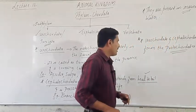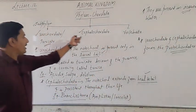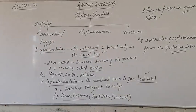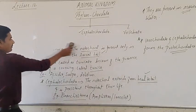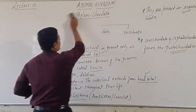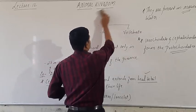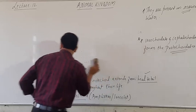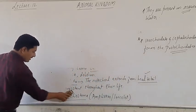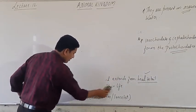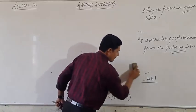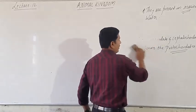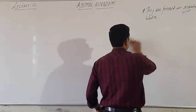What are Protocordates? Protocordates are the primitive form of chordates that include Urochordata as well as Cephalochordata. So that should be your answer. This is regarding the part of Urochordata and Cephalochordata. Now let us move on to the next part — the subphylum Vertebrata under phylum Chordata.